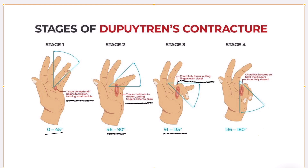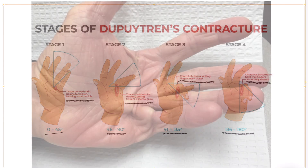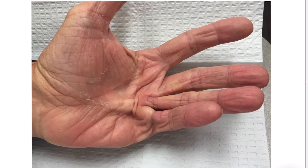The most severe stage is when the fingers are completely flexed, reaching about 180 degrees of flexion. At this stage, the cord has become so tight that the fingers cannot be fully extended. It starts from a nodule formed by fibrous tissue beneath the skin, and gradually a cord develops which keeps contracting, causing progressive flexion that becomes so severe and rigid that it cannot be extended back, leading to a permanent deformity.